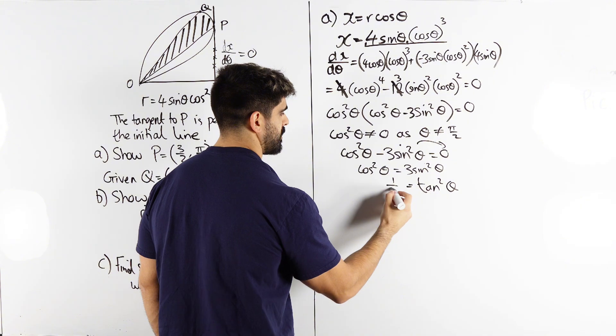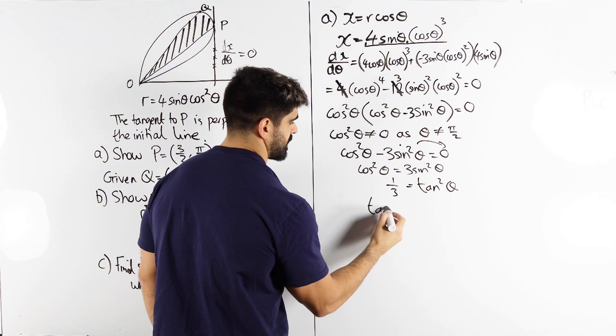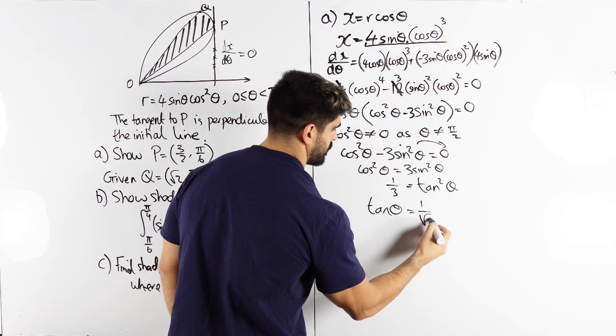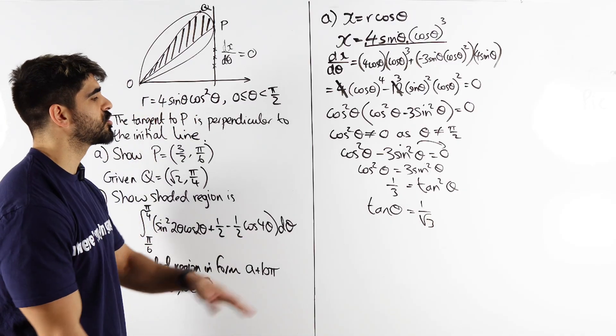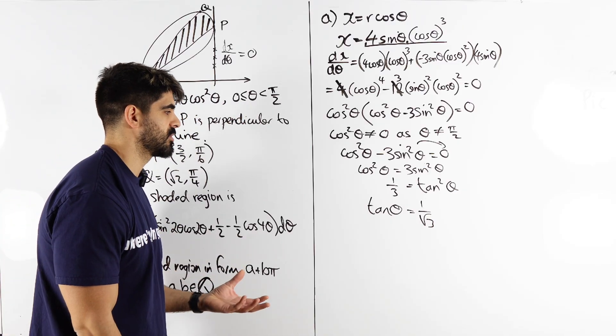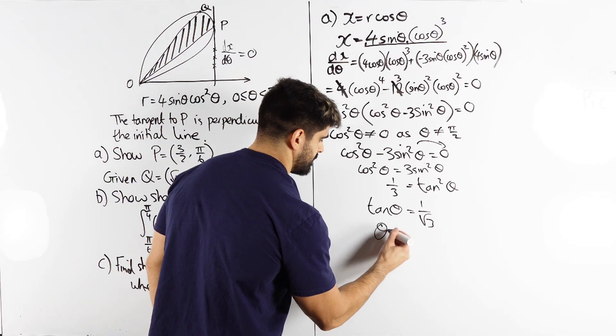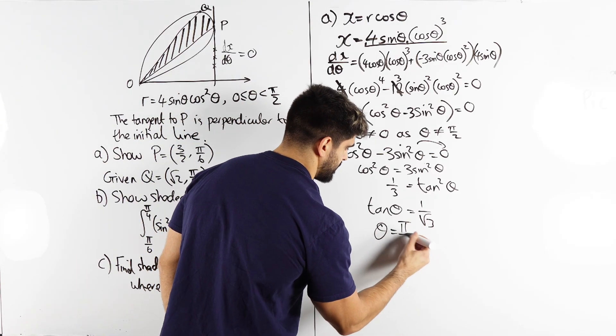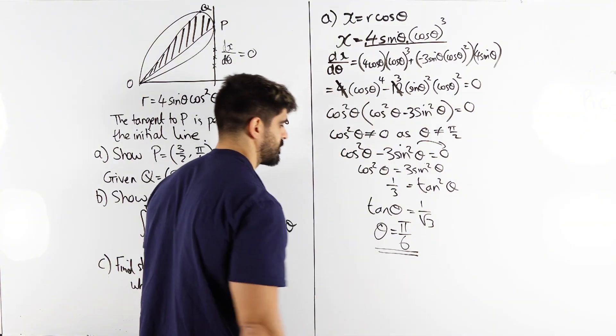So we're going to get tan theta is one over root three. The reason I'm not doing plus or minus is because of the range tan is acute. We're going to keep it positive. So inverse tan of one over root three is pi over six. Sweet.